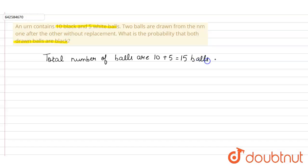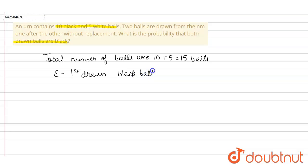Out of which 10 are black balls, and we have to find the probability of drawing black balls one after another without replacement. Let E be the event of the first drawn ball being black, and F be the event of the second drawn ball being black.